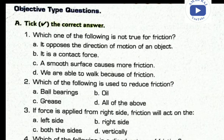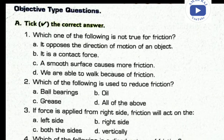Roughness causes friction, and rough surfaces cause more friction, so option C is correct. Now question two: which of the following is used to reduce friction? Ball bearings are used to reduce friction, oil is also used to reduce friction, grease is also used to reduce friction — so option D, all of the above, is correct.